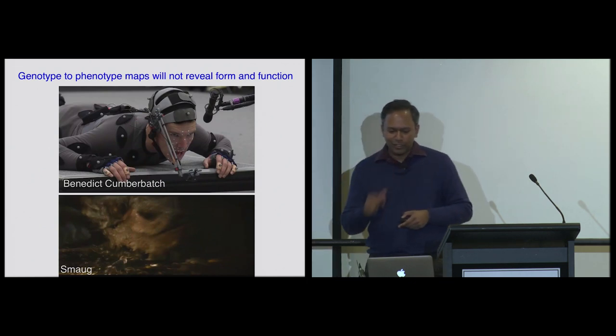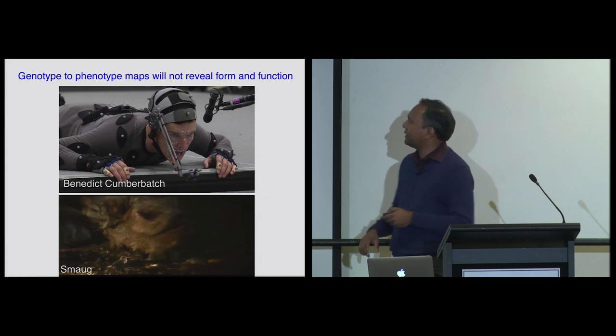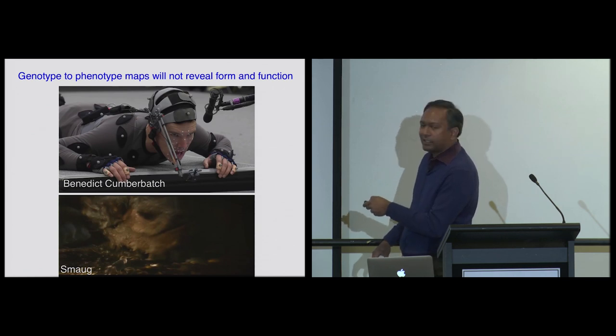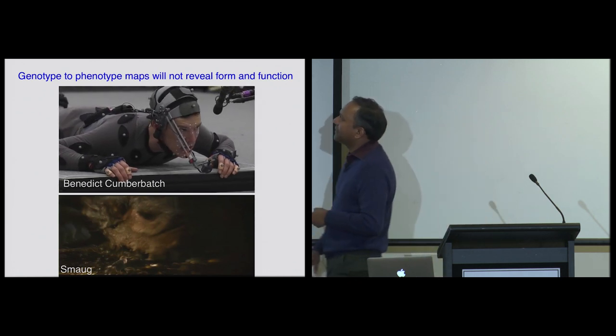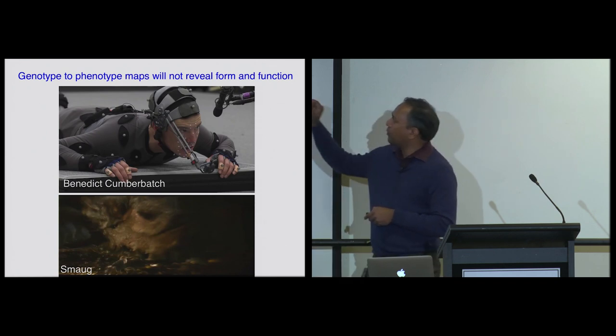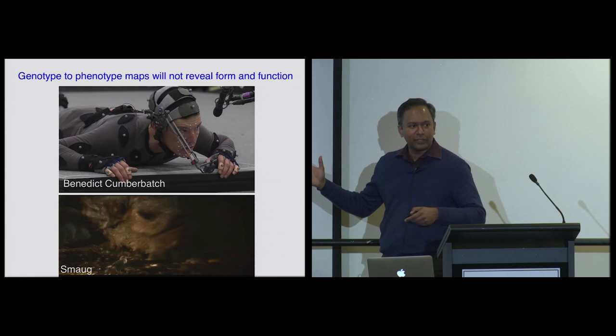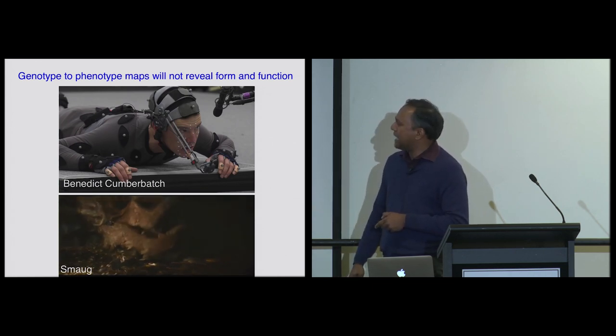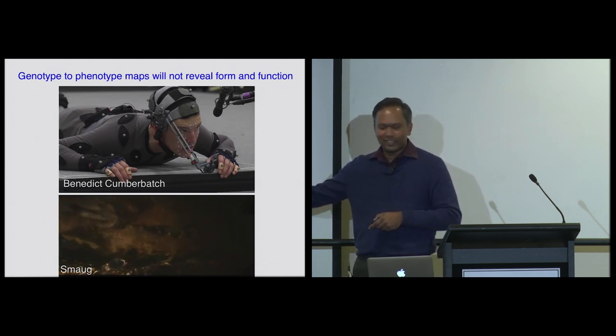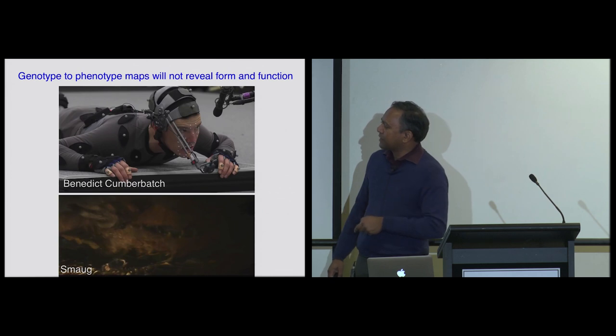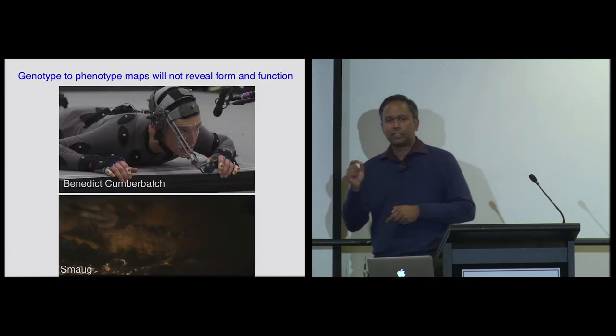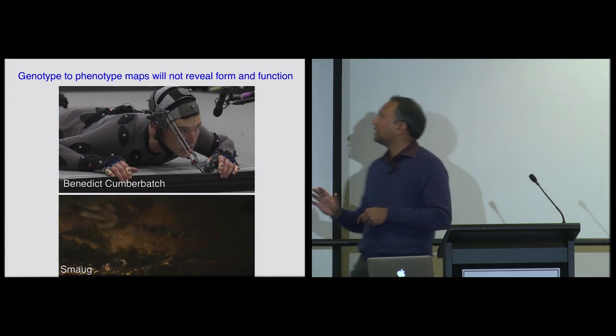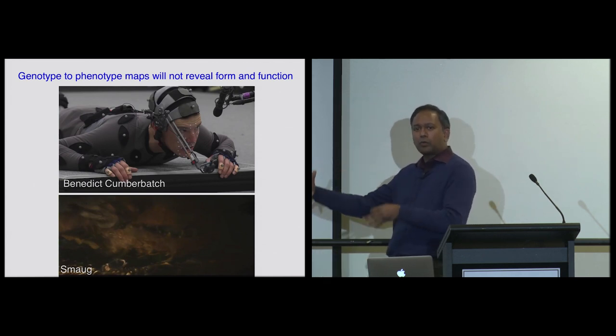So I want to illustrate that using this idea from motion capture. So this is Benedict Cumberbatch getting ready to give his best Smaug. And on his face, you can see these white dots. And when he speaks, all those dots moved. But then what those dots are mapped to depends on the movie. This is the Hobbit, so it's mapped to a dragon. And then as he moves, Smaug moves. So it's like the genotype's relationship to the phenotype or the form is only seen in these changes. So if you wanted to derive the form, you simply cannot. You would need to understand what was the form before.